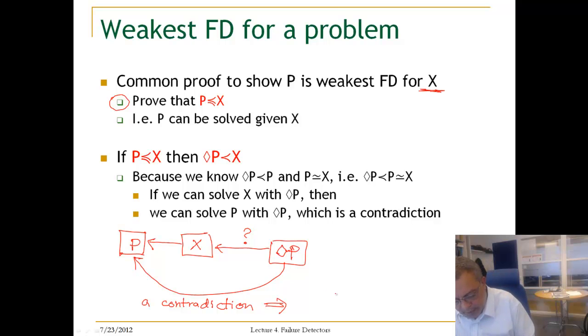Which therefore we can say that we cannot implement X by a weaker failure detector than P. So, which means that basically diamond P is strictly weaker than X.